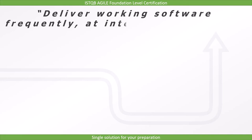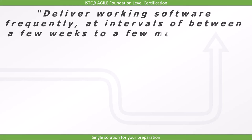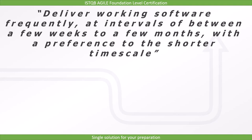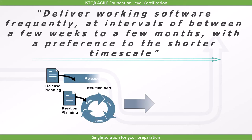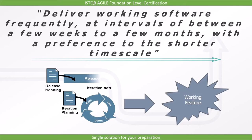The third principle is: deliver working software frequently at intervals of between a few weeks to a few months, with a preference to the shorter timescale. In Agile development, the software is released in iterations, and in each iteration the focus is on providing working software.